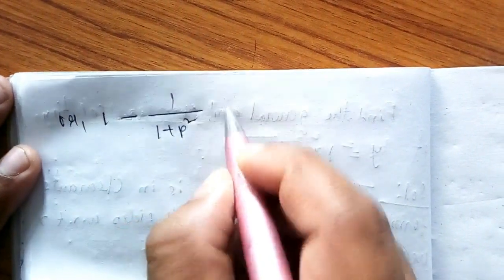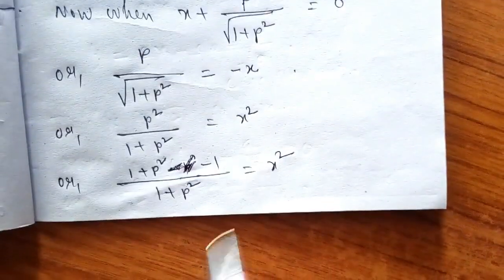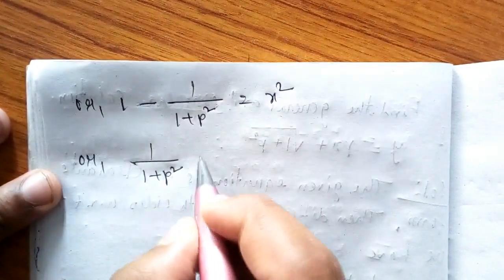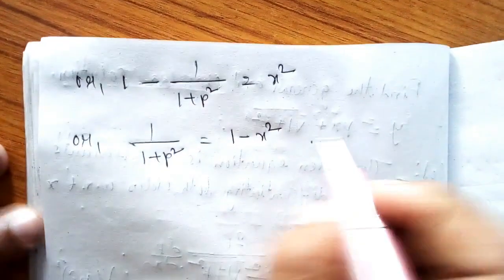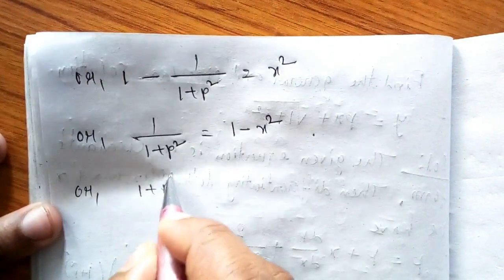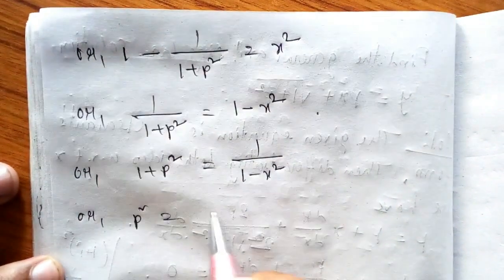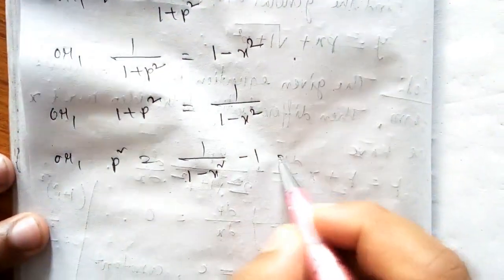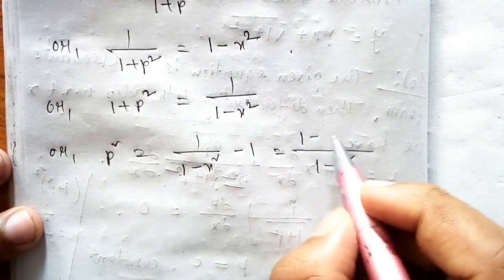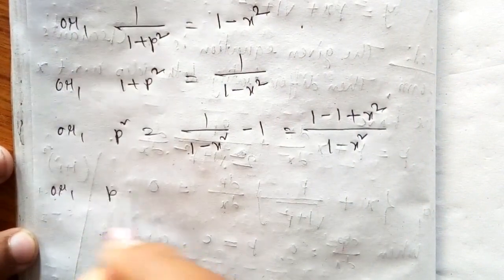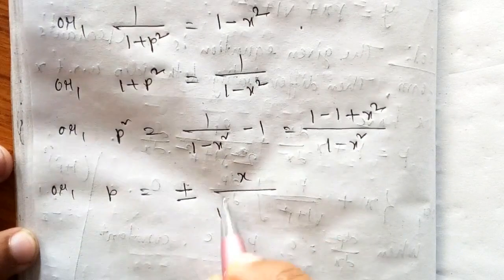So 1 / (1 + p²) = 1 − x², or 1 + p² = 1 / (1 − x²), giving p² = [1 / (1 − x²)] − 1 = x² / (1 − x²). Therefore p = ±x / √(1 − x²).